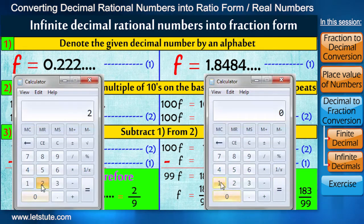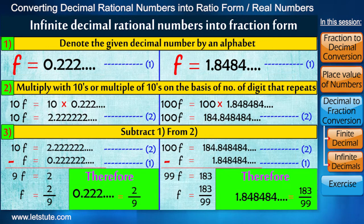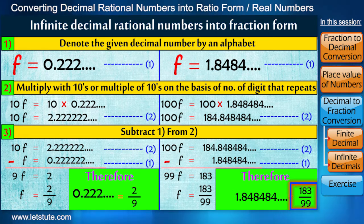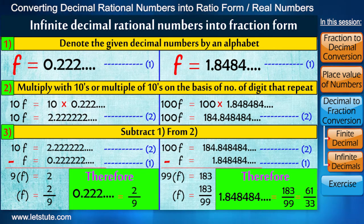We can again cross-check this. Now note one more thing here: the fraction 2 upon 9 is already in its simplest form, but the fraction 183 upon 99 can be again written as 61 upon 33 in its simplest form. I hope we have understood this.